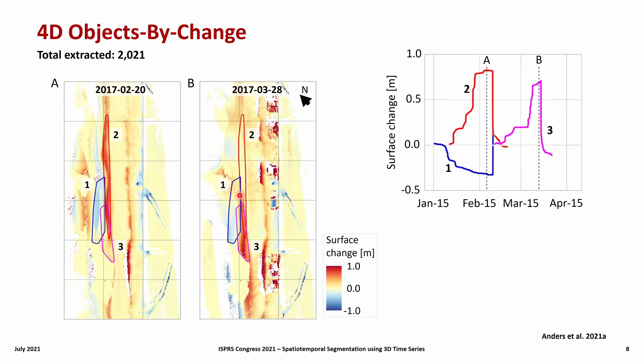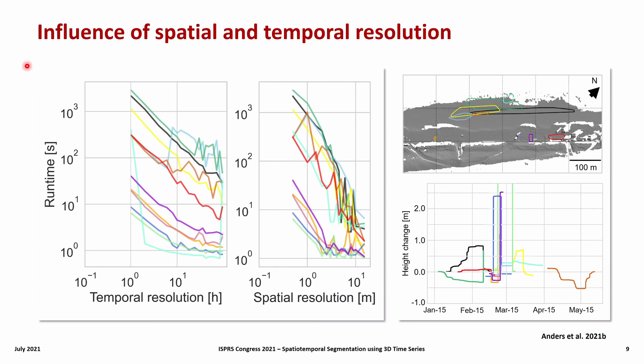Now let me come to the disadvantage of the time series based method, which is the increase in computational cost introduced by the region growing, where time series similarity is calculated for each search location. The similarity metric is derived as fast dynamic time warping distance, which has a linear complexity. We therefore examined if the temporal or spatial resolution can be reduced, at least for some of the changes, to achieve a reduction in overall run times.